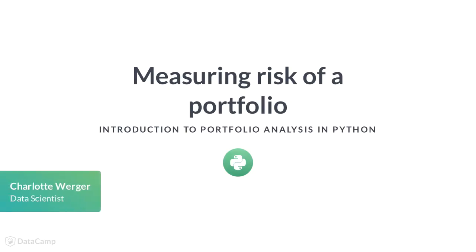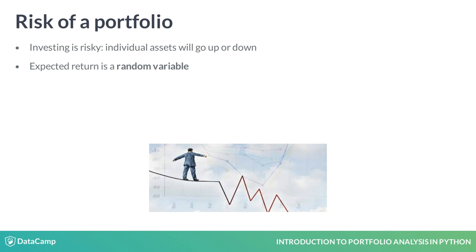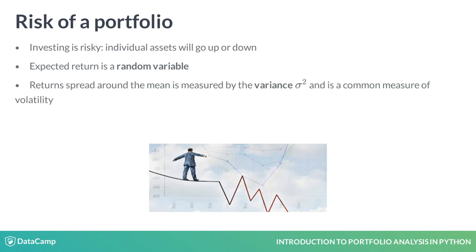Let's talk about portfolio risk. When you invest in stocks, you don't know beforehand what your return will be. Prices go up and down, so there is a degree of uncertainty, which implies that stock return is a random variable. The extent to which the actual returns are spread around their mean value is called variance.